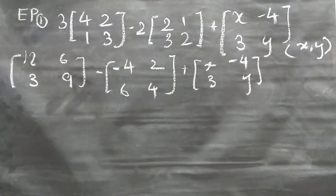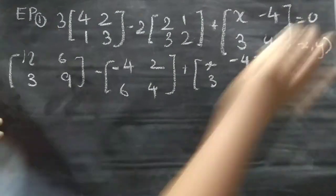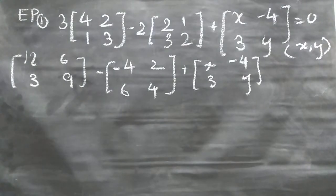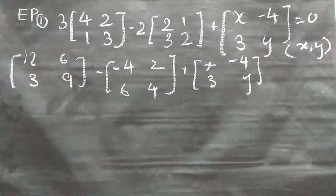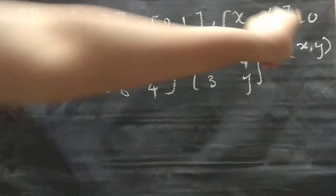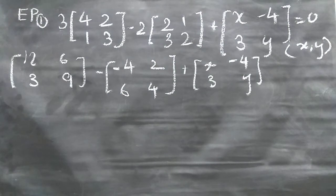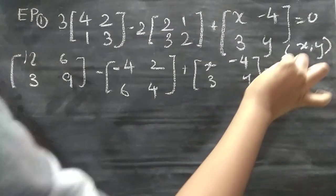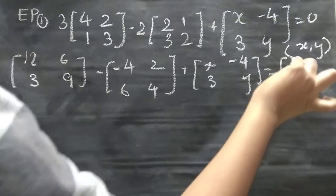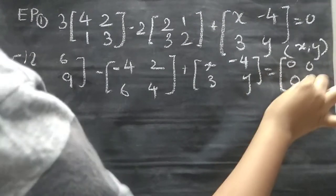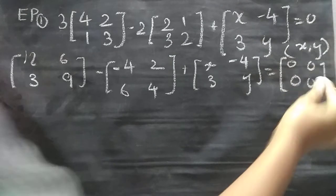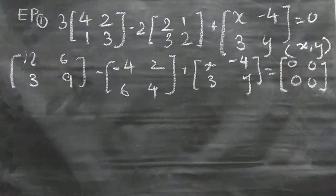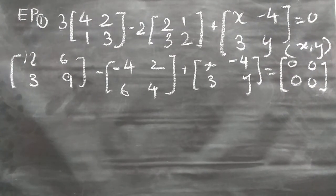Now, since the right-hand side has nothing, we can equal it to 0. Zero means a zero matrix — 0, 0, 0, 0 — in this form. We have to write it that way because everything is in the form of a matrix, so that also should be in the form of a matrix.